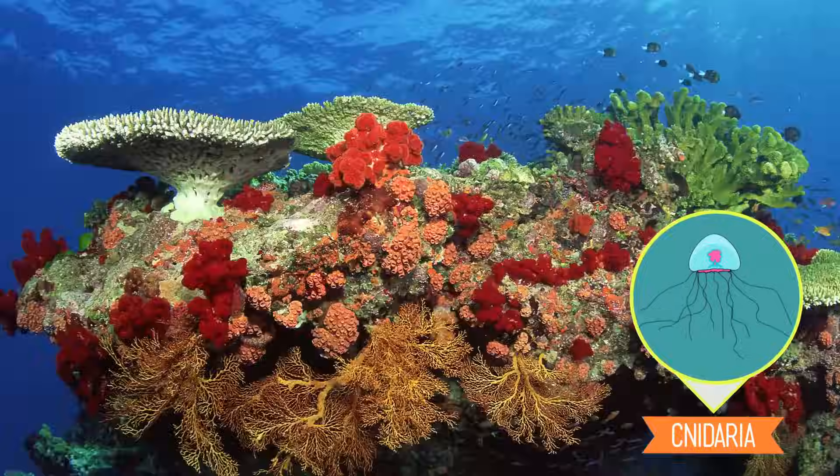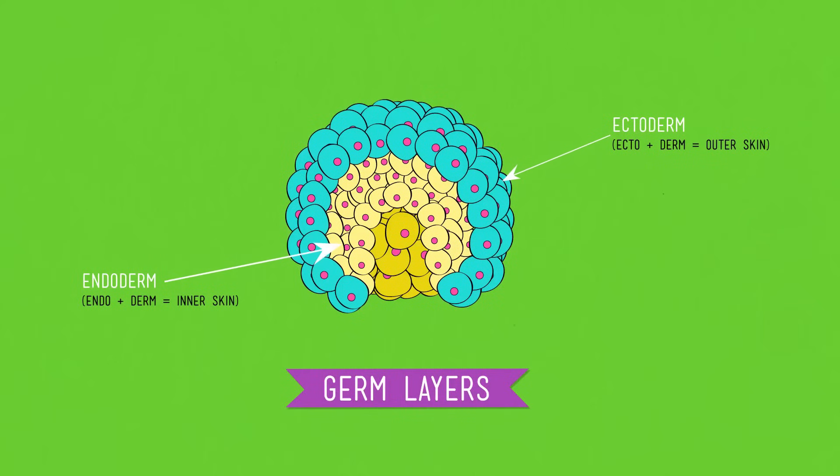Things get more interesting with Cnidaria, which include jellies, sea anemones, corals, and hydras. Their first major evolutionary development is that they form two germ layers — the endoderm, or inside derm, and the ectoderm, the outside derm. These form a tube that allows an animal to ingest, digest, and get rid of stuff. This makes cnidarians among the oldest living descendants of the world's first diploblast — the common ancestor of all true animals. But jellies and anemones still have only one hole that serves as both mouth and anus, and no organs, so they're still pretty simple.